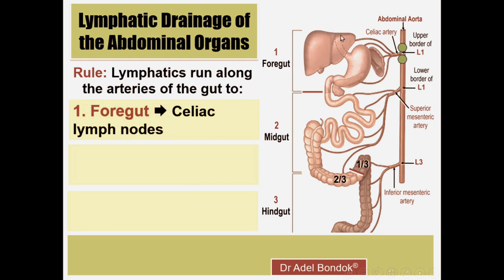The parts of the foregut include: the abdominal part of the esophagus, the stomach, the upper part of the duodenum above the biliary orifice, the liver, the gallbladder, and also the spleen. All of these structures drain into the celiac lymph nodes.